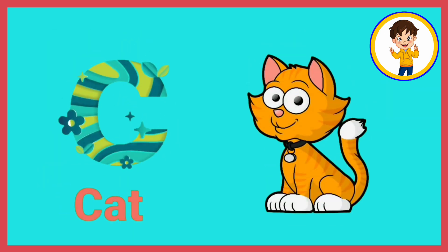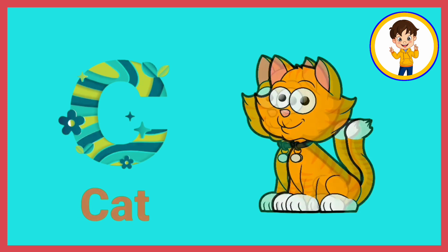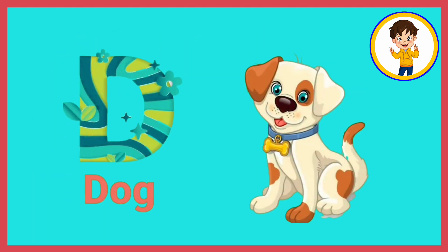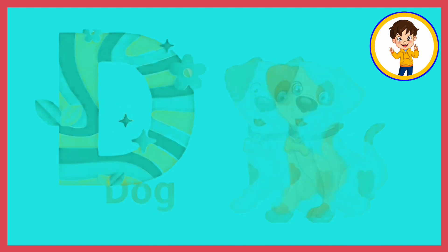C. C for cat. Cat means billy. D. T for dog. Dog means kutta.